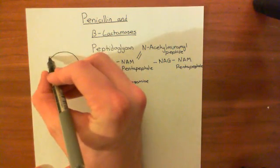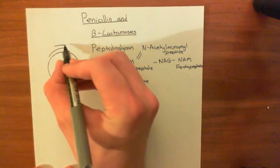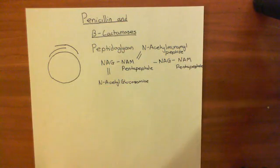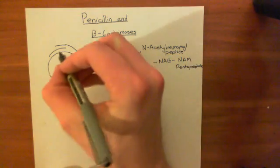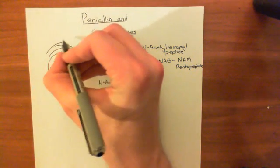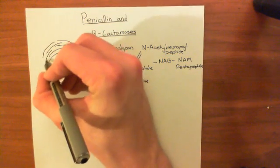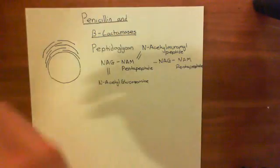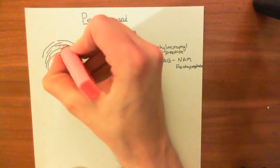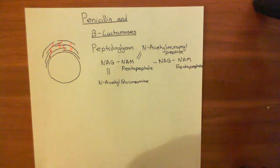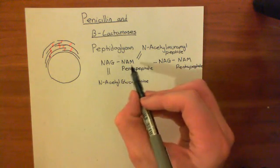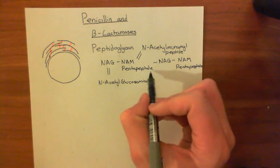You synthesize on the surface of your cells these great big chains of peptidoglycan polymer over and over again. But single strands of polymer are not a functional cell wall. What you need to do is synthesize absolutely loads of these strands and cross-link them — connect them together into a meshwork. You need to put in cross-links between these polymers.